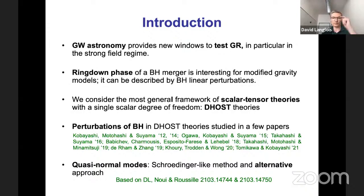There are many aspects that can be used in black hole mergers to get information about gravity, but here I'm going to concentrate on one phase which is relatively easy to analyze: the ring-down phase. This is just after the merger of two black holes — there is a single black hole which is perturbed, and this ring-down phase can be described by linear perturbation with respect to one black hole solution, which is why it's relatively simple. It could be a very good test for modified gravity.